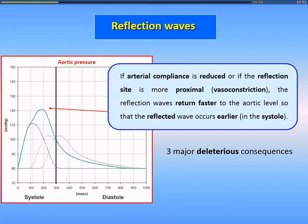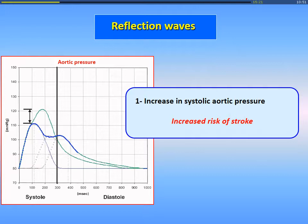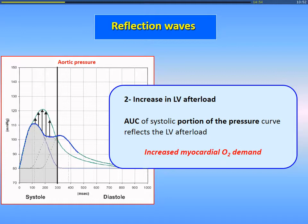This results in superimposition with a high systolic pressure. There are three major consequences of this pathologic phenomenon. The first is the increase in systolic aortic pressure with increased risk of stroke. The second is the increase in left ventricular afterload — represented by the additional area with the arrows — with increased myocardial oxygen demand. And also, you have a decrease in diastolic aortic pressure and in coronary perfusion pressure, with the risk of myocardial ischemia.